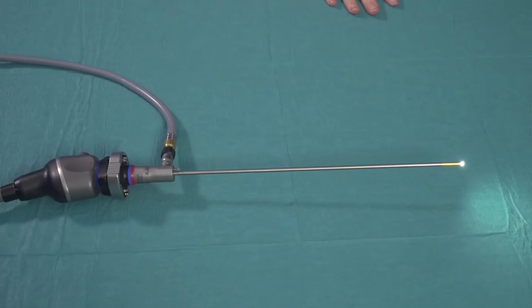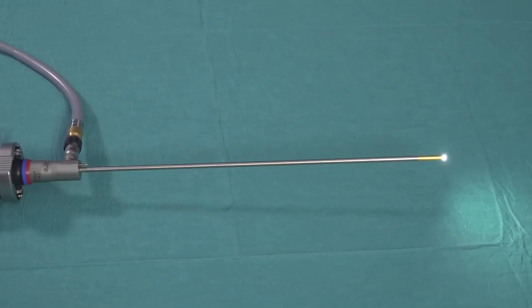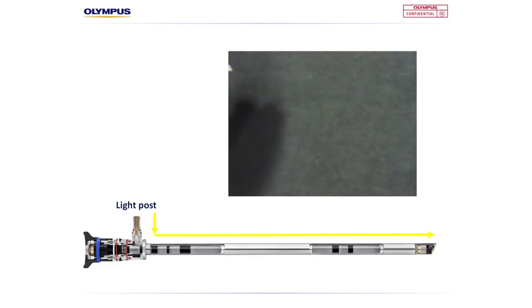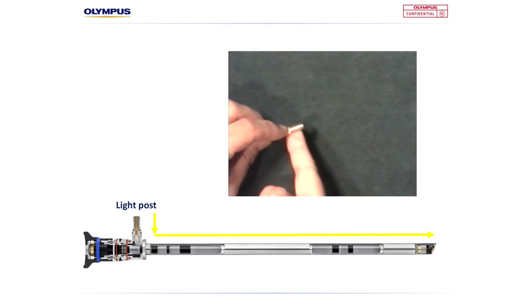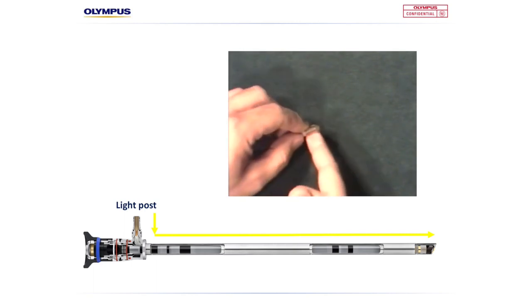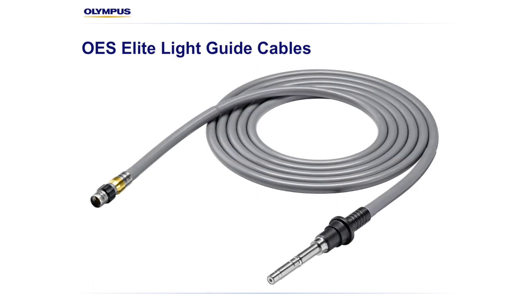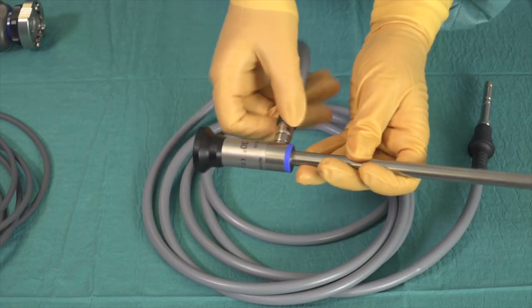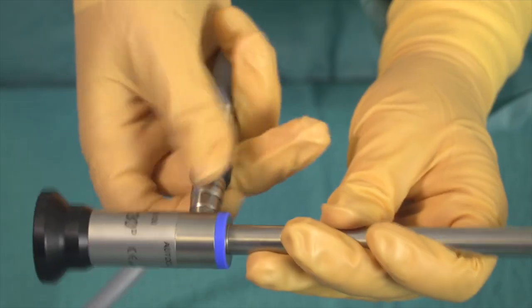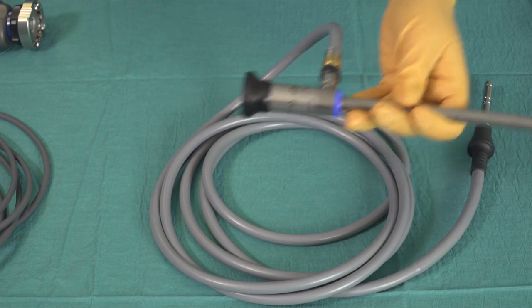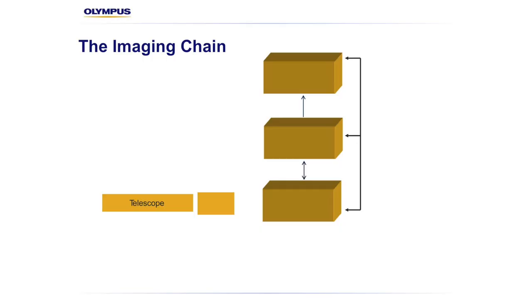But telescopes don't just relay the image — they also help us deliver light into the cavity within which we're observing. This is crucial when working within the body. Light is delivered via a bundle of tiny fibre optic strands which run along the shaft or tube of the telescope. When using a rod lens or fibre optic scope, a light guide will also be required to carry the light into the telescope from the surgical light source. The connection of the light guide onto the telescope is a simple thread twist, though a competitor telescope or light guide may require an adapter. This leads to the next component of the imaging chain: the light guide and light source.